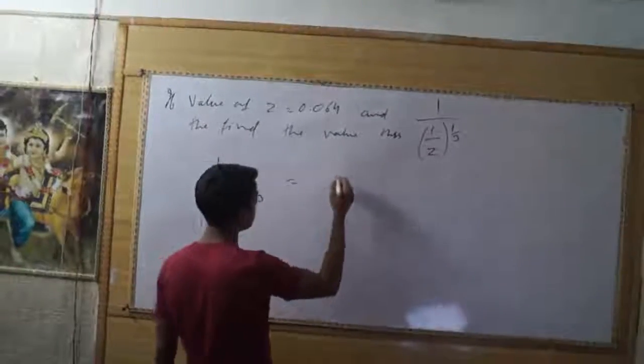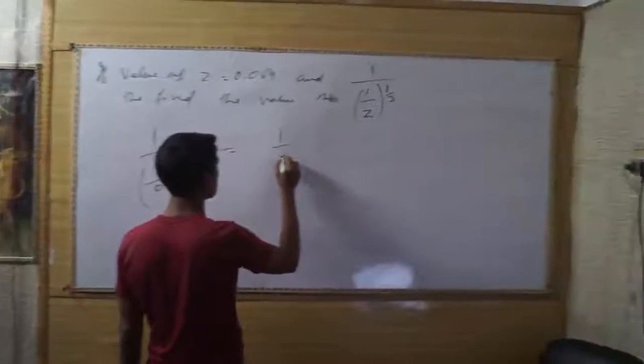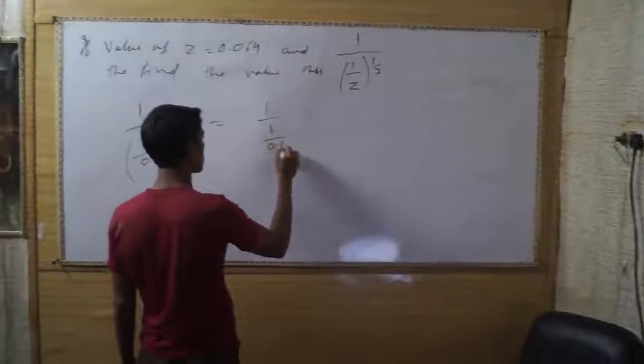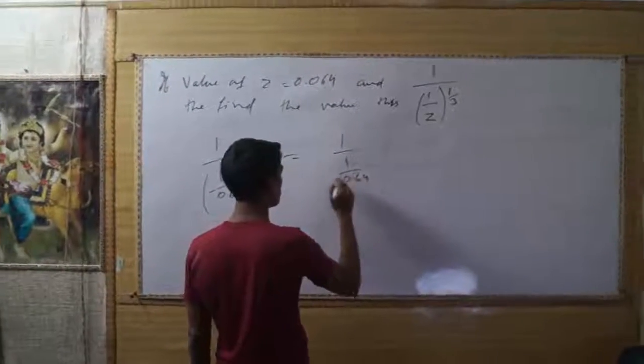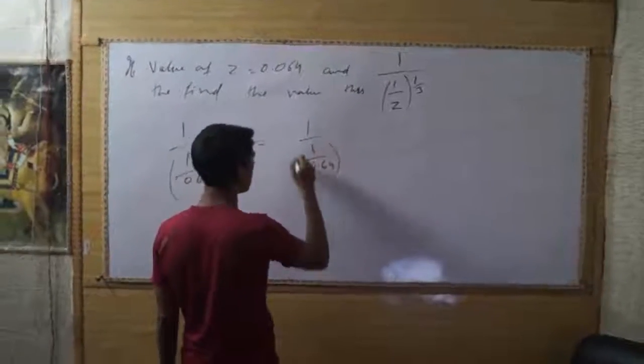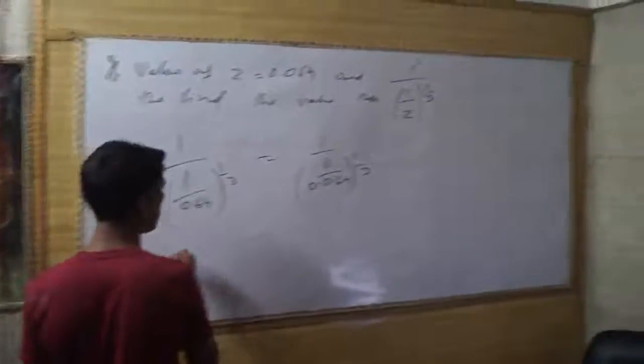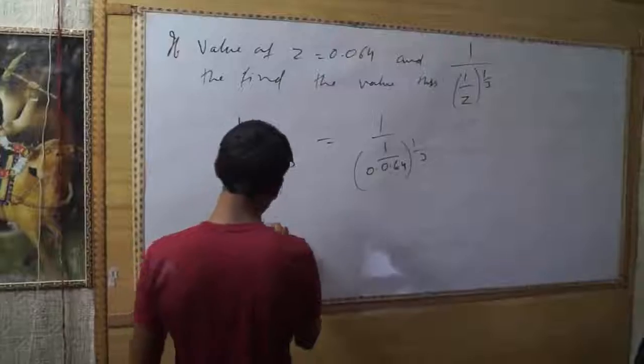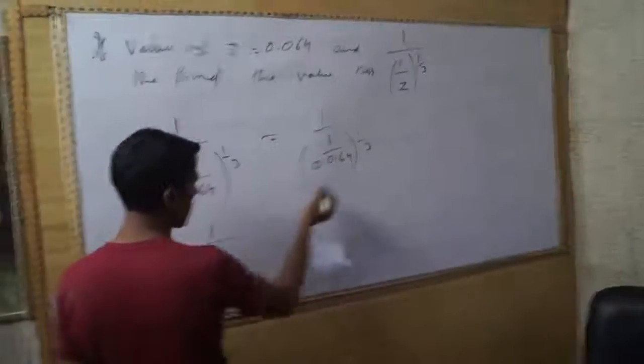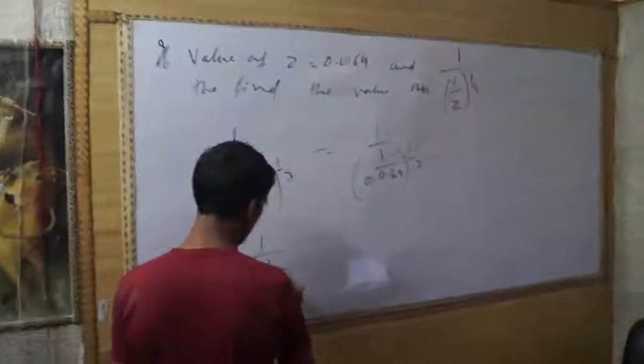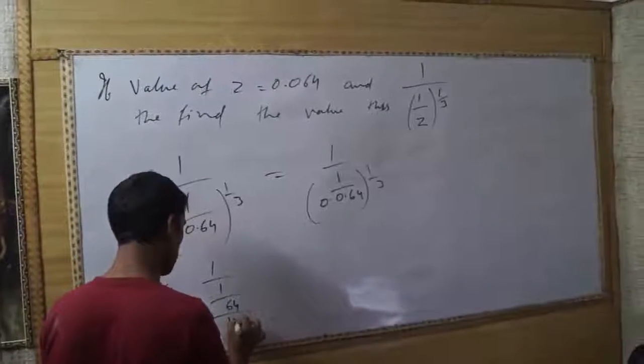Now, 1 divided by 0.064. We can also show this as 1 divided by 64 over 1000, raised to the 1/3 power.